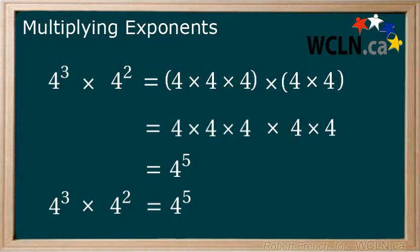So we can actually evaluate this much faster than by the way we used above. 4 to the power of 3 multiplied by 4 to the power of 2 is equal to 4 to the power of 3 plus 2, which is equal to 4 to the power of 5.